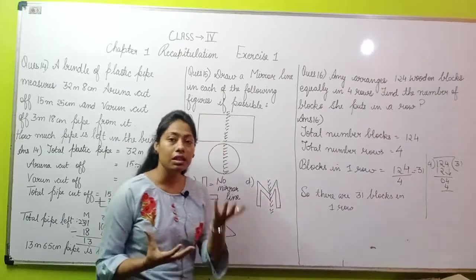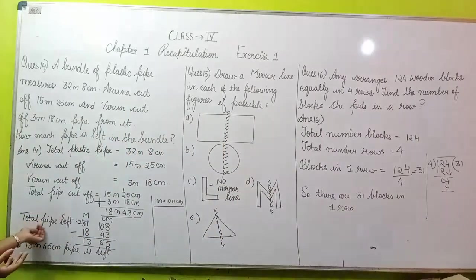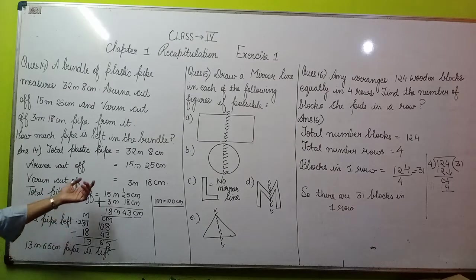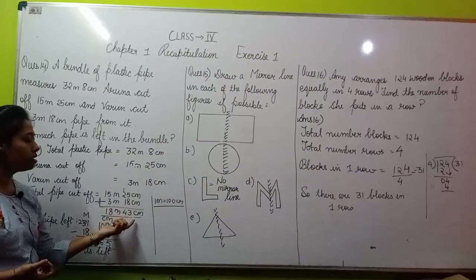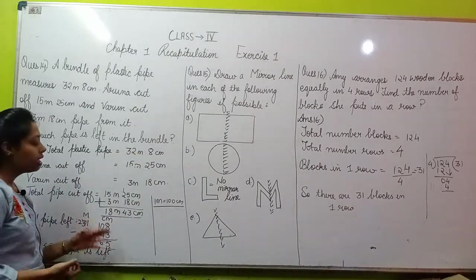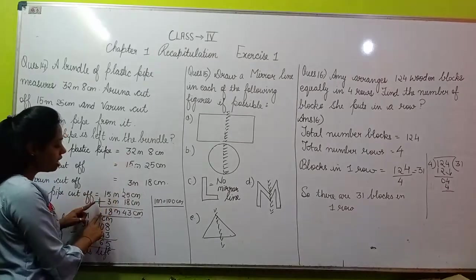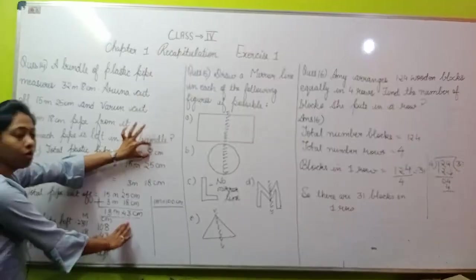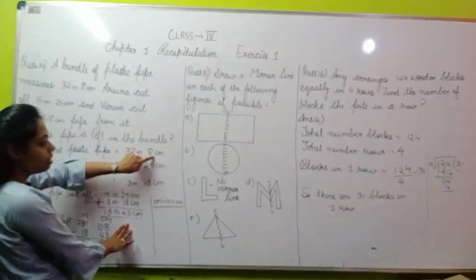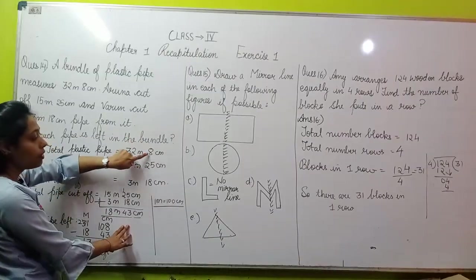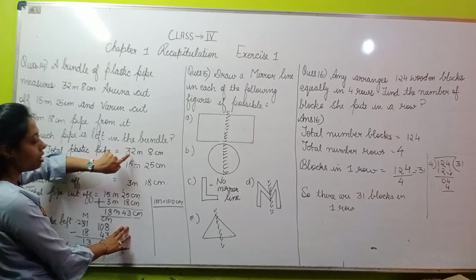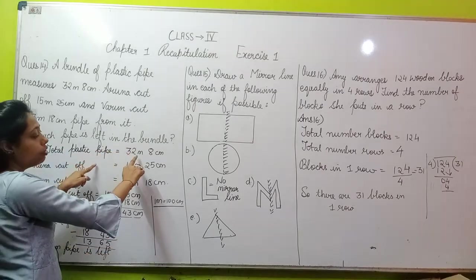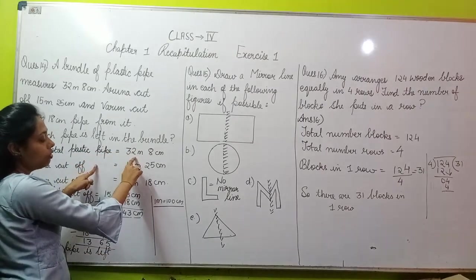Now we have to find how much is remaining. Total pipe left - how will we find it? If you subtract this from the total, you will get the answer. But you see, 32 minus 18 is easy, but 8 minus 43 we cannot do. So the centimeter value has to be increased. How will we increase the centimeter value? We will carry forward from here.